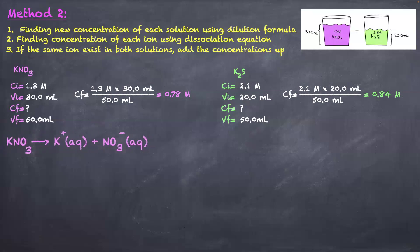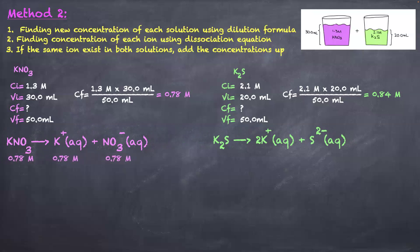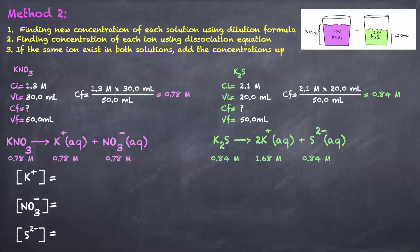The second step is again to write the dissociation equation. You can look at the ratios in the formula — 1 K⁺ and 1 NO₃⁻ for KNO₃ — and find concentrations that way, or write the dissociation equation to show your work. Do the same for K₂S. If KNO₃ is 0.78 M in the mixed solution, then K⁺ and NO₃⁻ are both 0.78 M. K₂S is 0.84 M, so K⁺ is double that (1.68 M) and S²⁻ is 0.84 M.